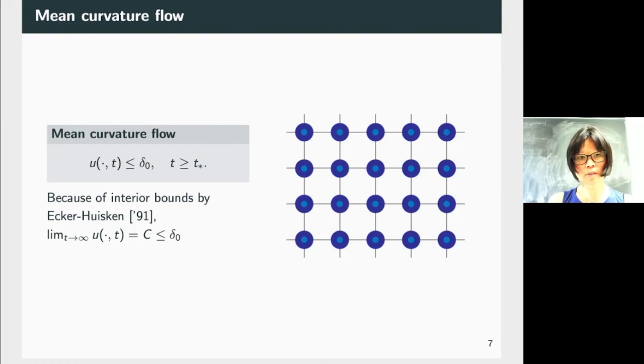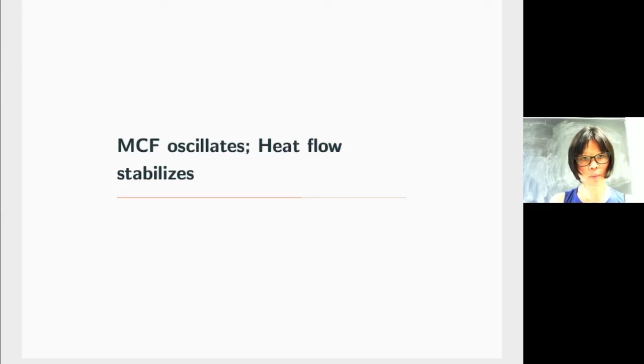So that's the first example where the heat flow and the mean curvature flow have different behavior at infinity. Now, you can say, well, they're both stabilized, so it's sort of the same behavior. In the next example, we will see a case where the mean curvature flow oscillates and the heat flow stabilizes.